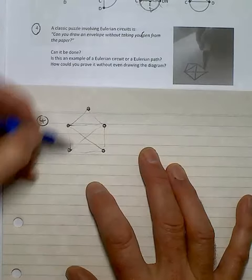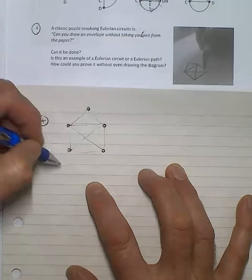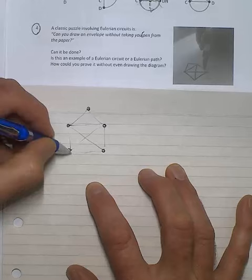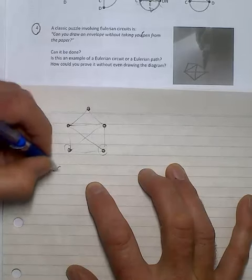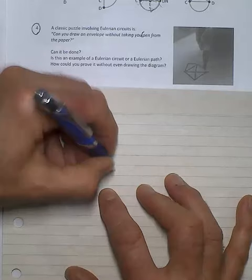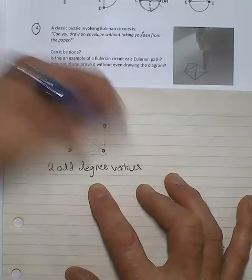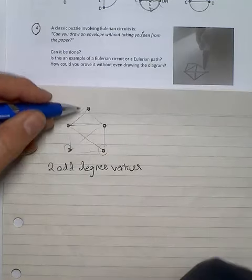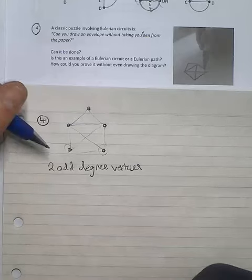In this scenario, if I was to show this as a series of edges and vertices, you will see there are two odd degree vertices and the rest are going to be even. That immediately suggests